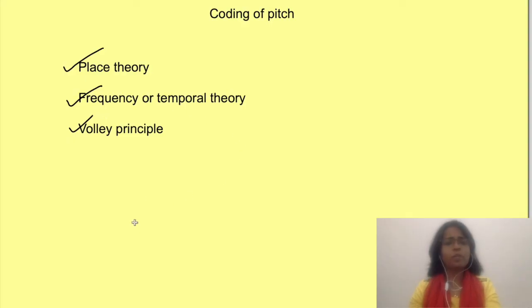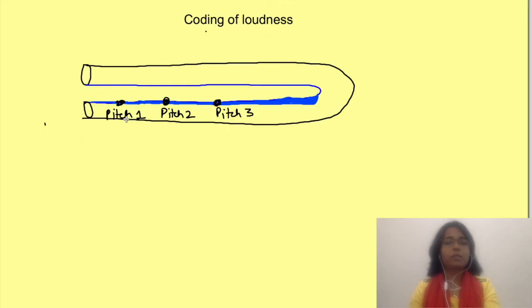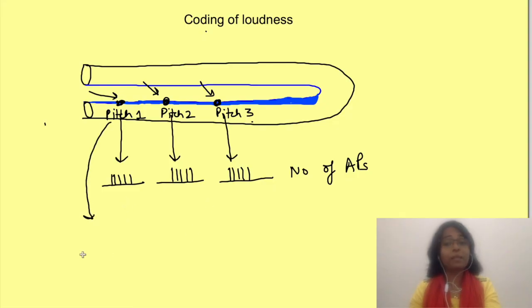What about the loudness of sound? For a particular pitch, loudness of sound is coded as the number of action potentials in the afferent nerve. Pitch is from where the action potential is coming from cochlea—that is place theory—or in what set pattern it is coming from cochlea—that is frequency and volley theory. And loudness is how many action potentials are coming from a particular place.